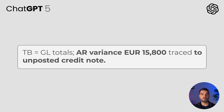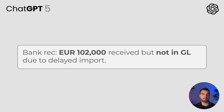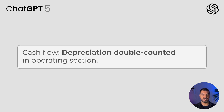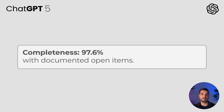ChatGPT says: trial balance totals matched general ledger values, but sub-ledger to general ledger reconciliation revealed a 15,800 variance in accounts receivable due to an unposted credit note. Bank statement confirmed 102,000 not yet recorded in the general ledger due to delayed import of statement data. Intercompany reconciliation between Entity A receivable 87,000 and Entity B payable 79,000 exposed a timing difference of 8,000 pending confirmation. Net profit and cash flow reconciliation identified depreciation included twice in the operating section. Overall reconciliation completeness: 97.6%.